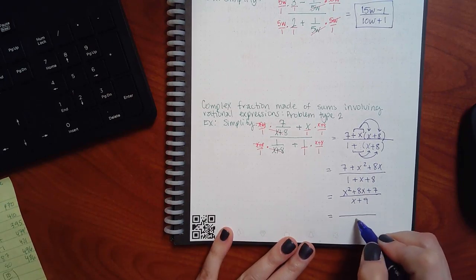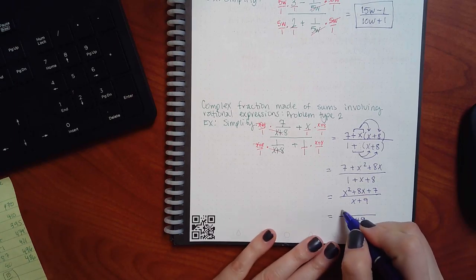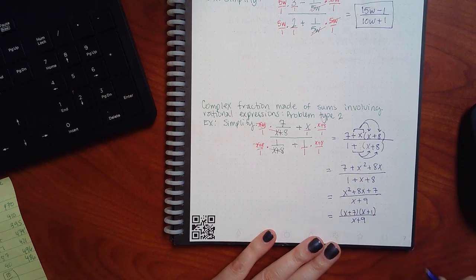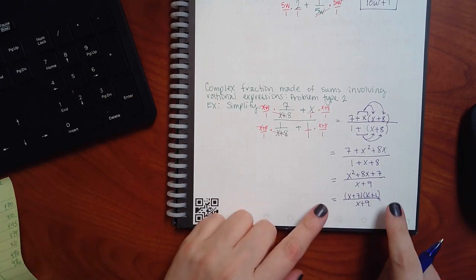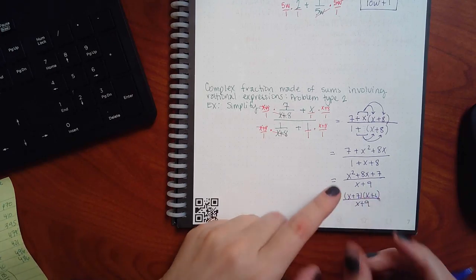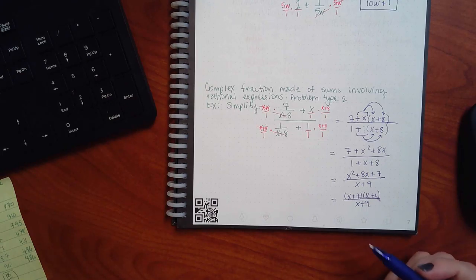Now, can the top be factored? Yeah. X plus 7 and X plus 1. And you have to do this because now that you have a giant factor and a giant factor for the whole numerator, now is where you would look to see if something can cancel or reduce. But I have a 7 and a 1 and a 9. They're not going to reduce with each other. Right?